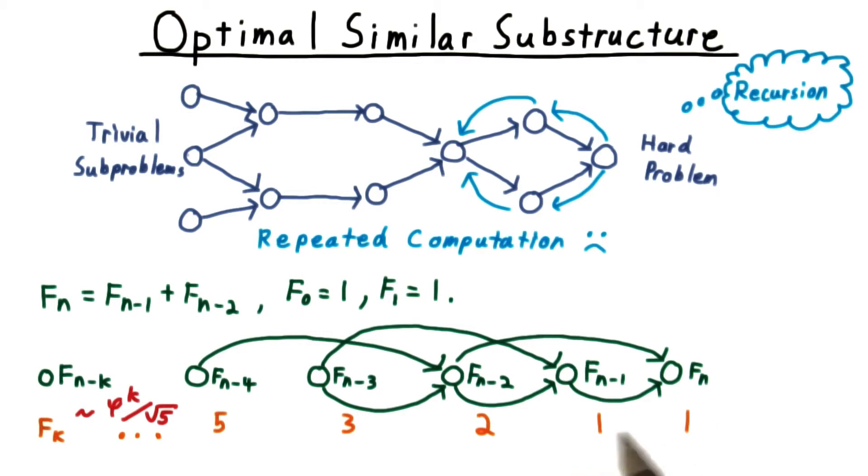Of course, computing the Fibonacci numbers doesn't need to be exponential. We could just start on the left here, initializing the first two numbers to 1 and 1, and then compute the next one as the sum of the previous two with a simple for loop.